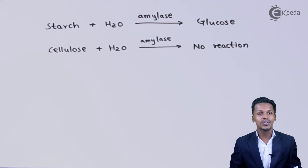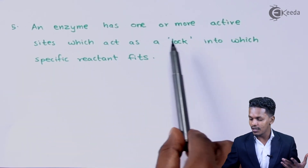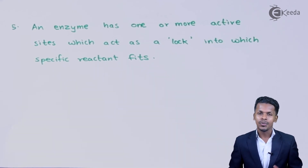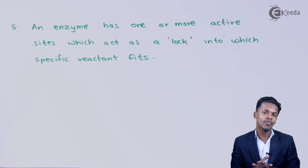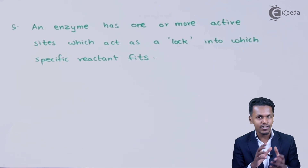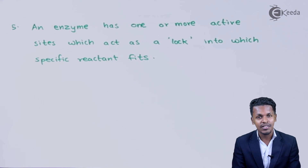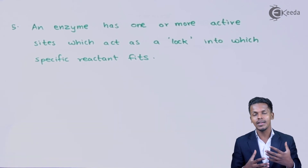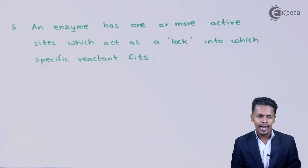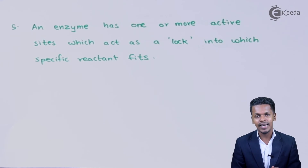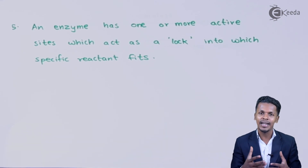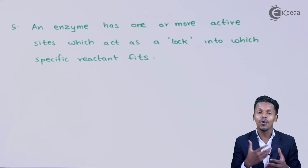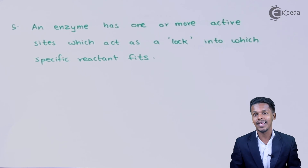An enzyme has one or more active sites which act as a lock into which a specific reactant fits. Because of their large and complex protein structure, enzymes have multiple active sites to which substrates get attached. A complex is formed, and from this complex a product is obtained — similar to what we discussed in heterogeneous and homogeneous catalysis. Enzymes can have multiple active sites, allowing multiple substrate attachments, resulting in products obtained in high amounts and very fast.